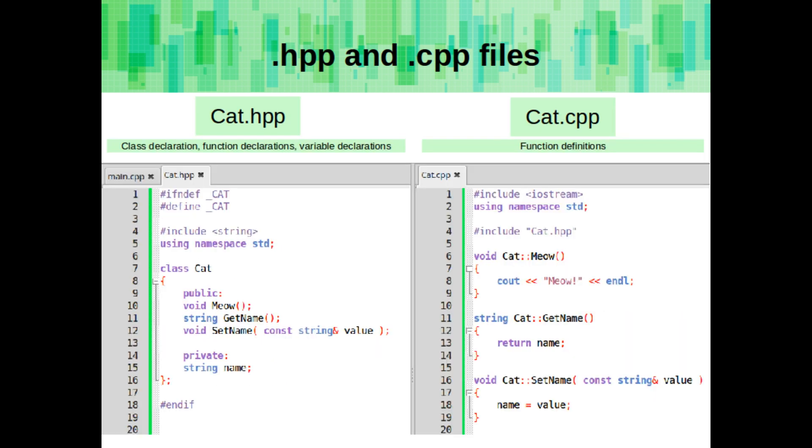The .hpp file contains the class declaration, the function declarations, and the variable declarations. The .cpp file contains the function definitions.